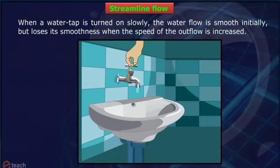When a water tap is turned on slowly, the water flow is smooth initially, but loses its smoothness when the speed of the outflow is increased.